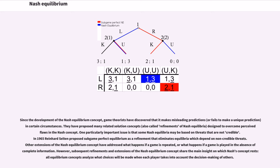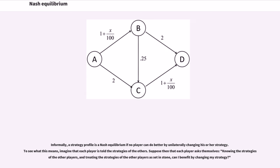However, subsequent refinements and extensions of the Nash Equilibrium concept share the main insight on which Nash's concept rests: all equilibrium concepts analyze what choices will be made when each player takes into account the decision-making of others. Informally, a strategy profile is a Nash Equilibrium if no player can do better by unilaterally changing his or her strategy. To see what this means, imagine that each player is told the strategies of the others. Suppose then that each player asks themselves, knowing the strategies of the other players, and treating the strategies of the other players as set in stone, can I benefit by changing my strategy?